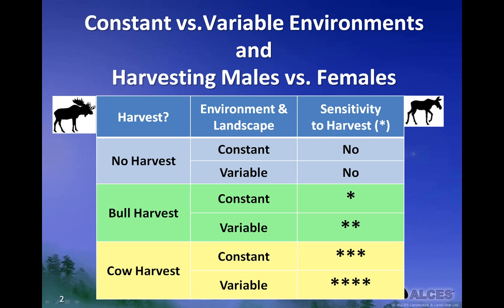The second point is that moose populations which live in variable environments are more sensitive to harvest than populations that live in constant environments. The reason is that when populations are subjected to large random changes in natural mortality due to a variable environment and are also harvested, the natural and harvest mortality become additive, causing the population to decline more frequently and severely than one subject to a constant rate of natural mortality. Over time, populations in variable environments are not able to bounce back as quickly or fully as those under more constant environmental conditions.